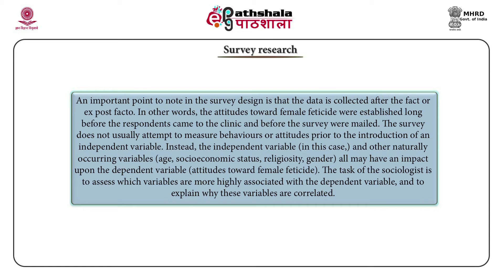The survey does not usually attempt to measure behavior or attitudes prior to the introduction of an independent variable. Instead, the independent variable — in this case female feticide — and other naturally occurring variables such as age, socio-economic status, religiosity, and gender, all may have an impact upon the dependent variable, that is attitude towards female feticide. The task of the sociologist is to assess which variables are more highly associated with the dependent variable and to explain why these variables are correlated.